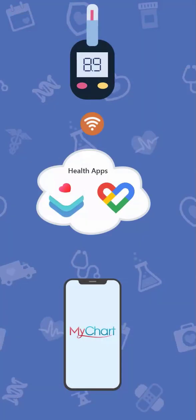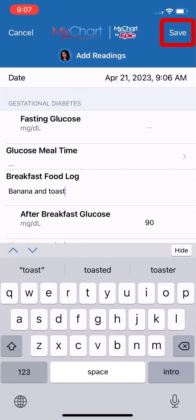You might have smart devices that connect to Apple Health or Google Fit. Those apps can then be set up to sync data to MyChart. In the Track My Health activity, you only need to connect your tracking app one time. After that, whenever you step on your smart scale or take a reading from your smart glucometer, it syncs automatically to MyChart and completes the health tracking task for you. I'll return to the to-do list.